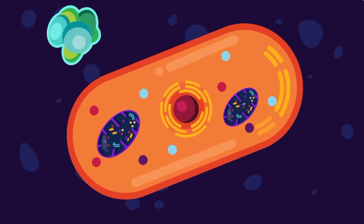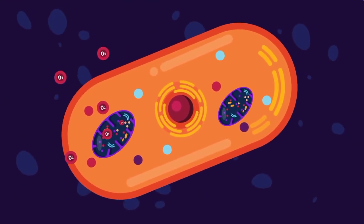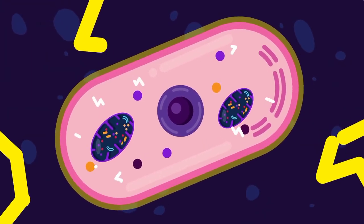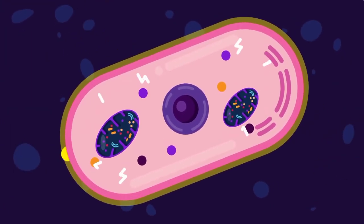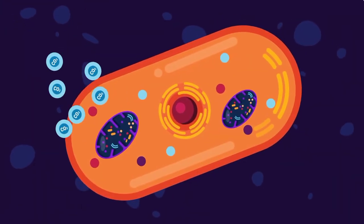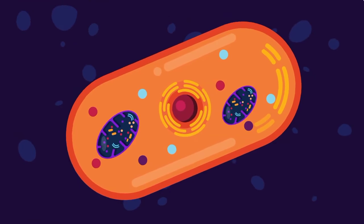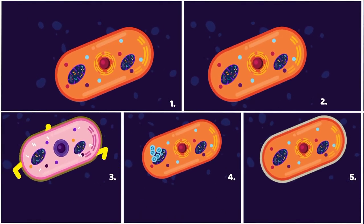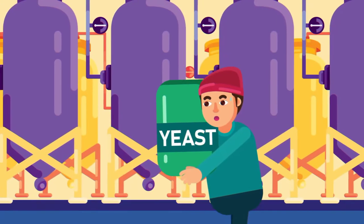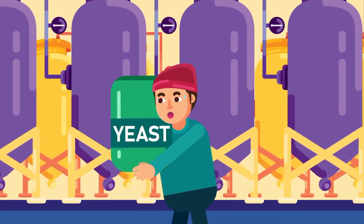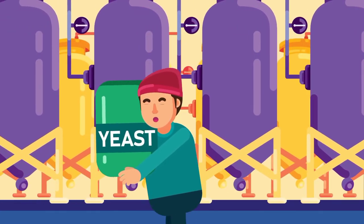At the end of this multi-step process, one molecule of glucose, with the help of six molecules of oxygen, can produce 36 molecules of adenosine triphosphate (ATP), along with six carbon dioxide molecules and six water molecules. This makes aerobic respiration a very efficient process. All multicellular organisms, and some yeast, can carry this type of respiration.